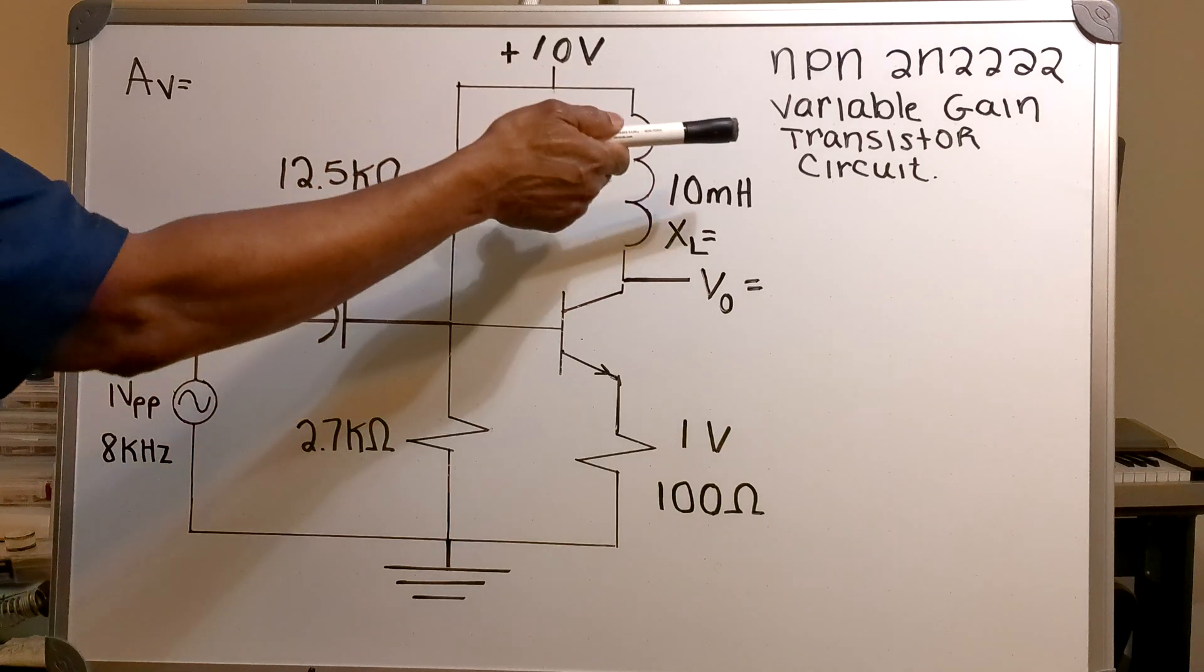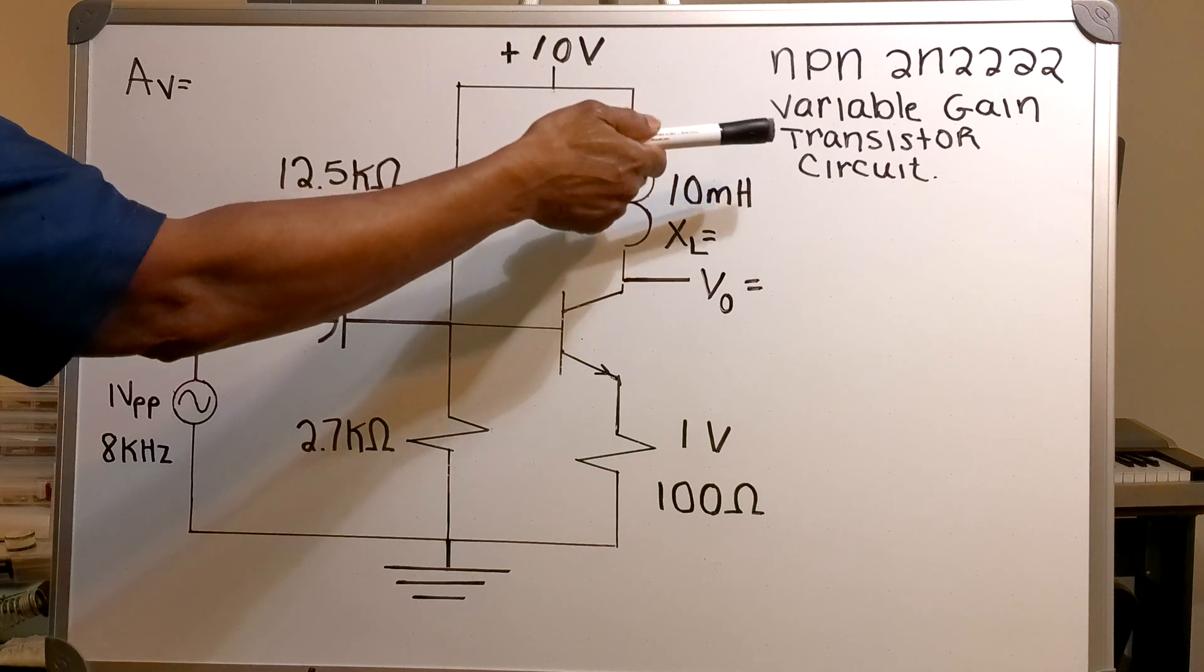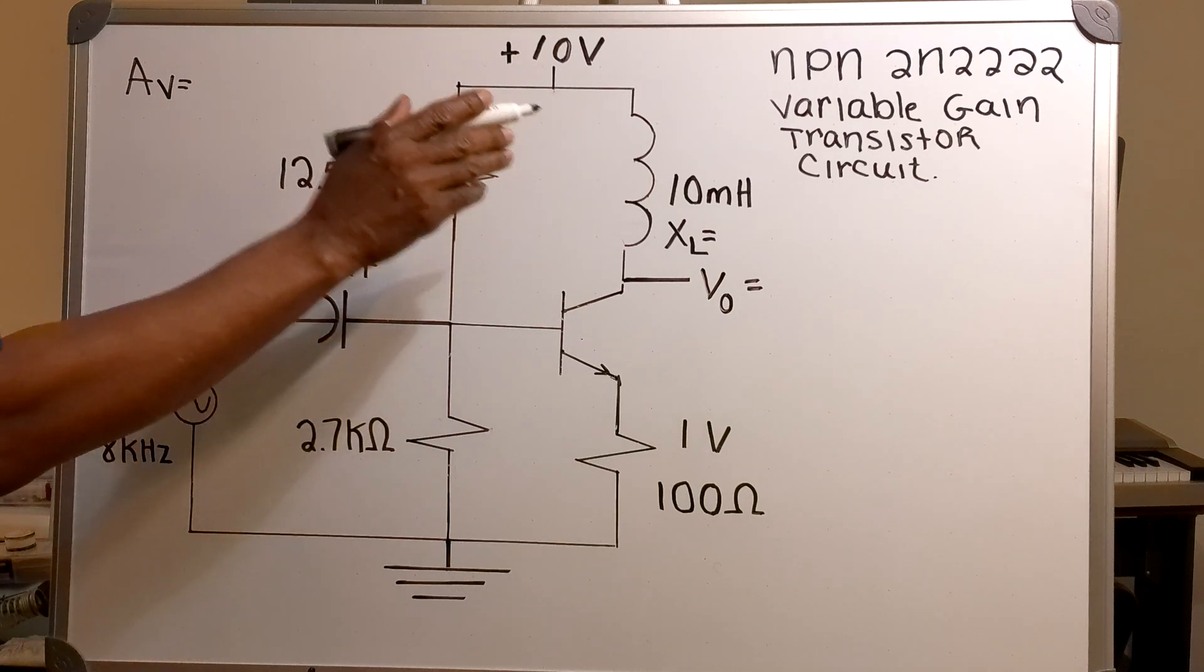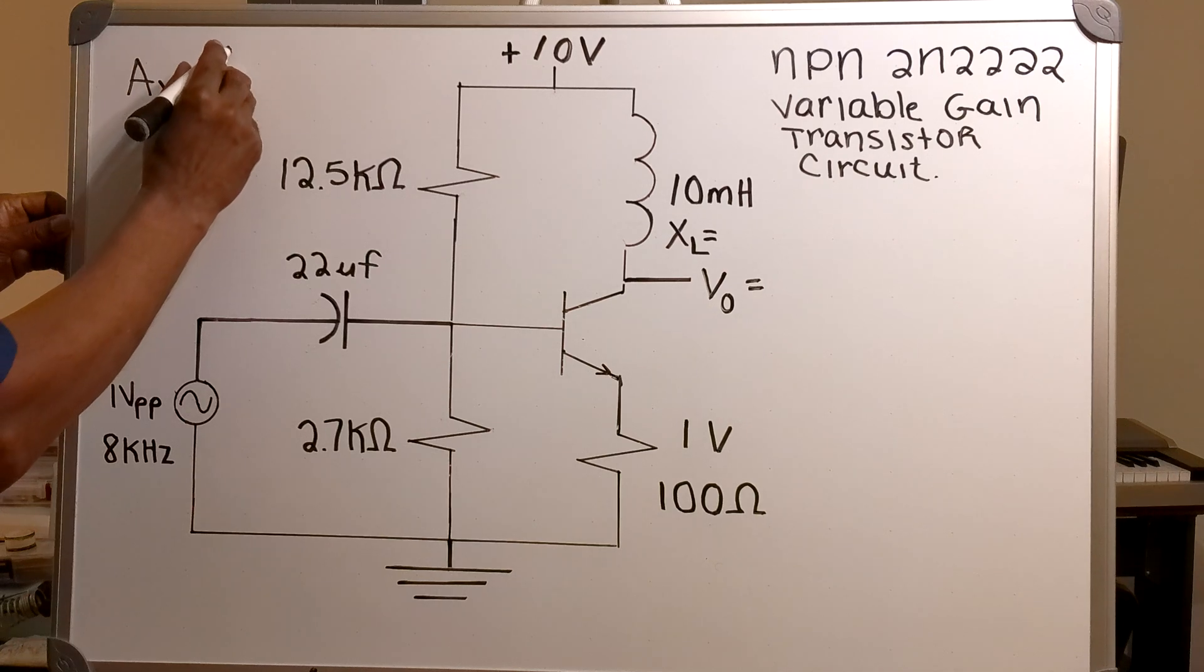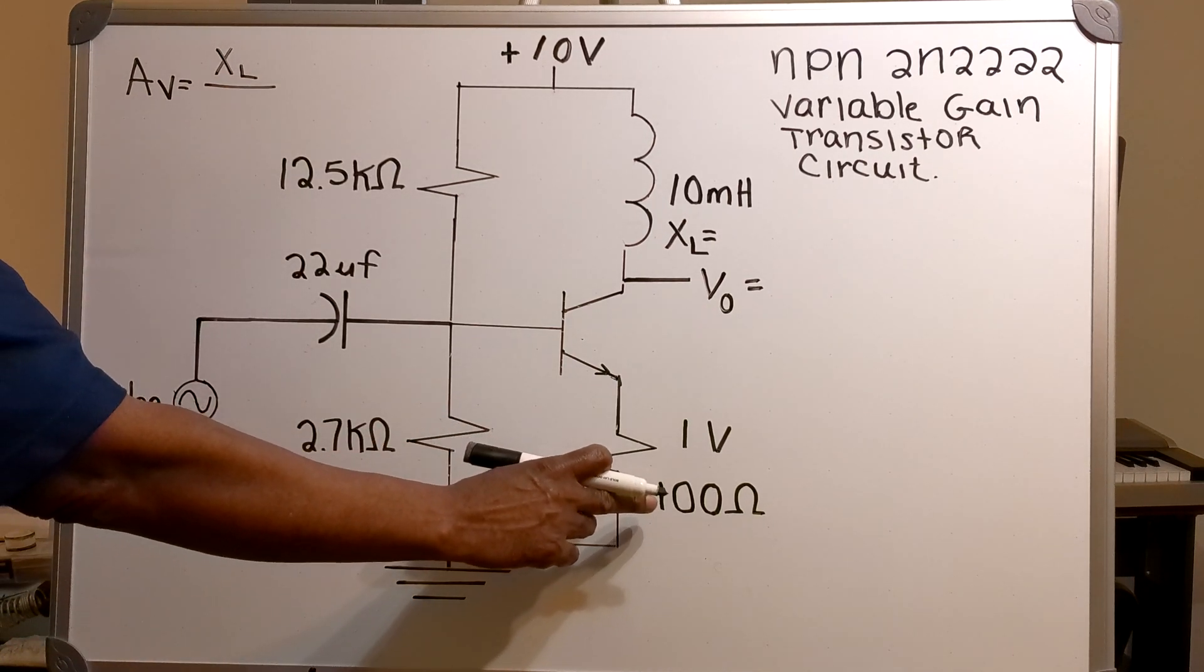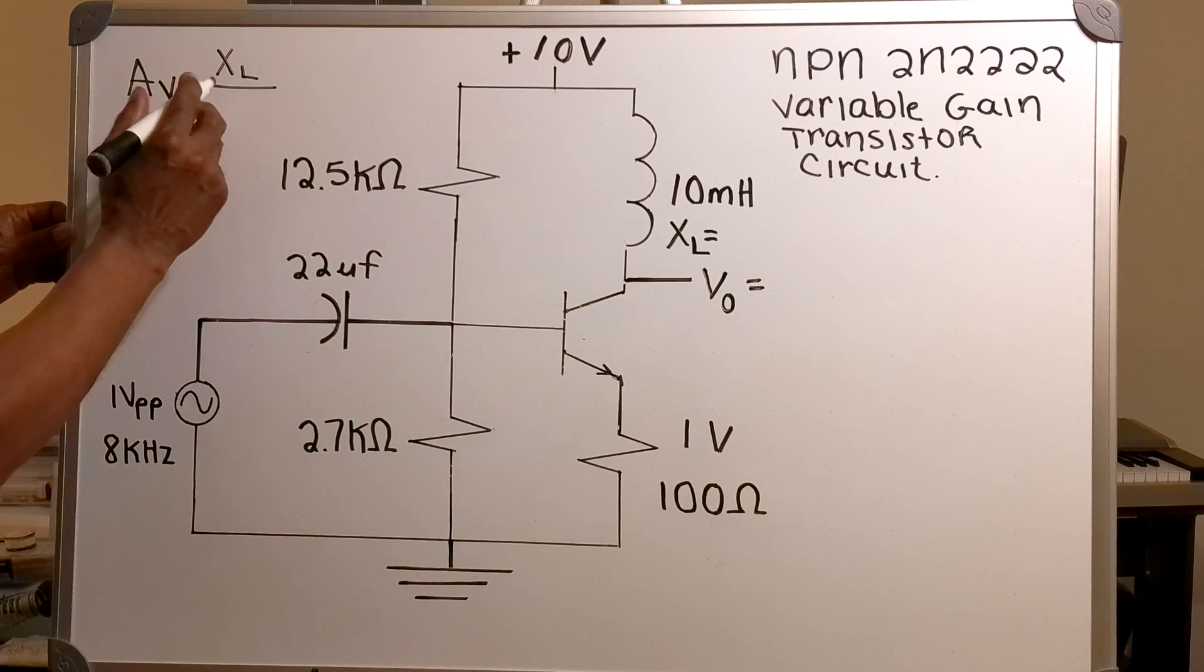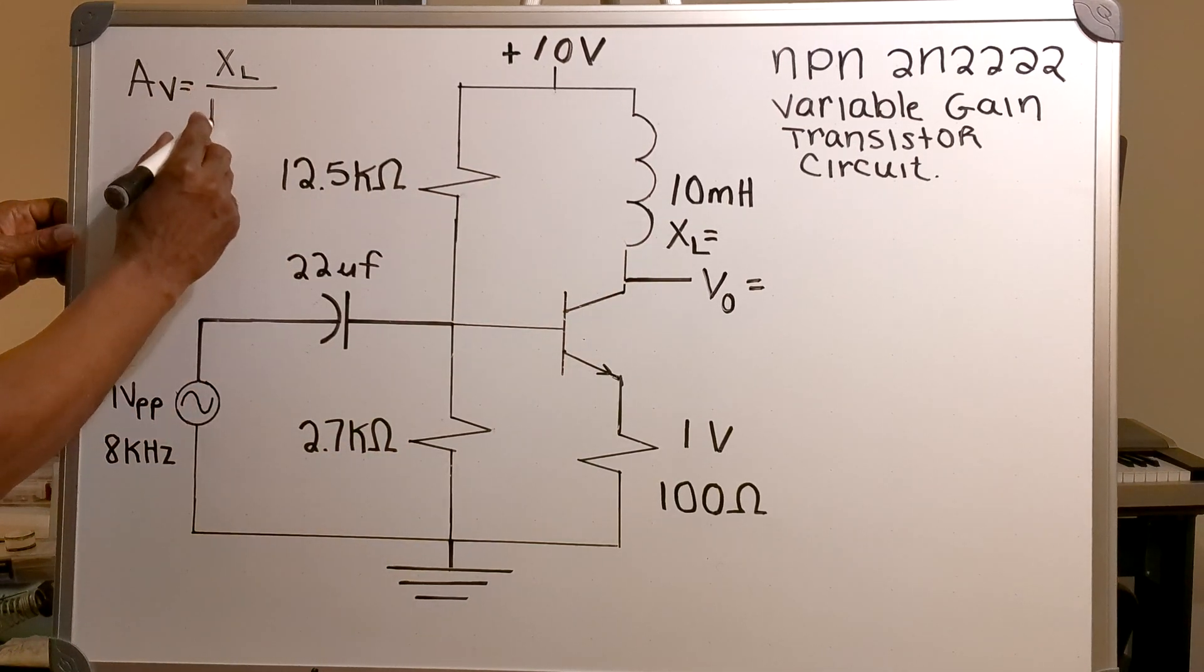The reason I call it a variable gain transistor is because the gain is determined by the XL, the inductive reactance, over the emitter resistance. So the gain will be XL over 100 ohms.